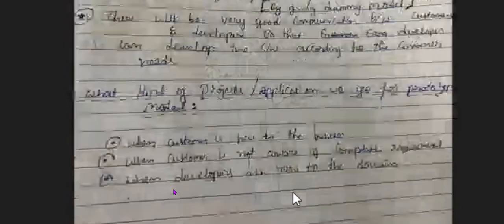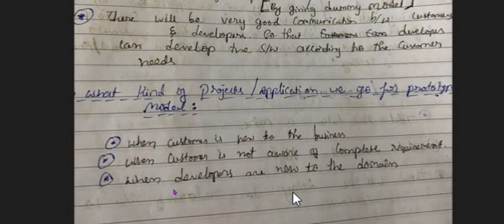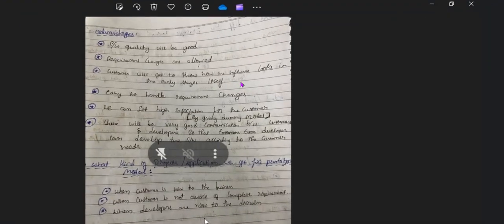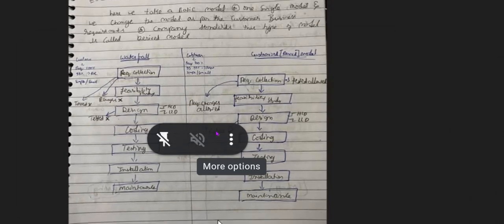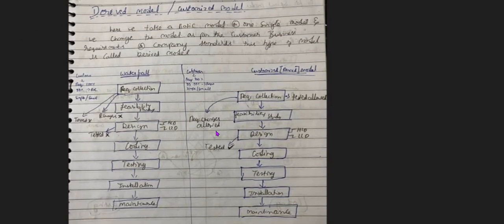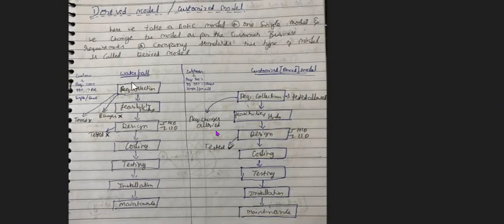The next model is the derived model. Here, we take one of the basic SDLC models — such as waterfall, spiral, or V and V — and modify it as per the customer's business requirement or company standard. The customized version of that model is called a derived model.